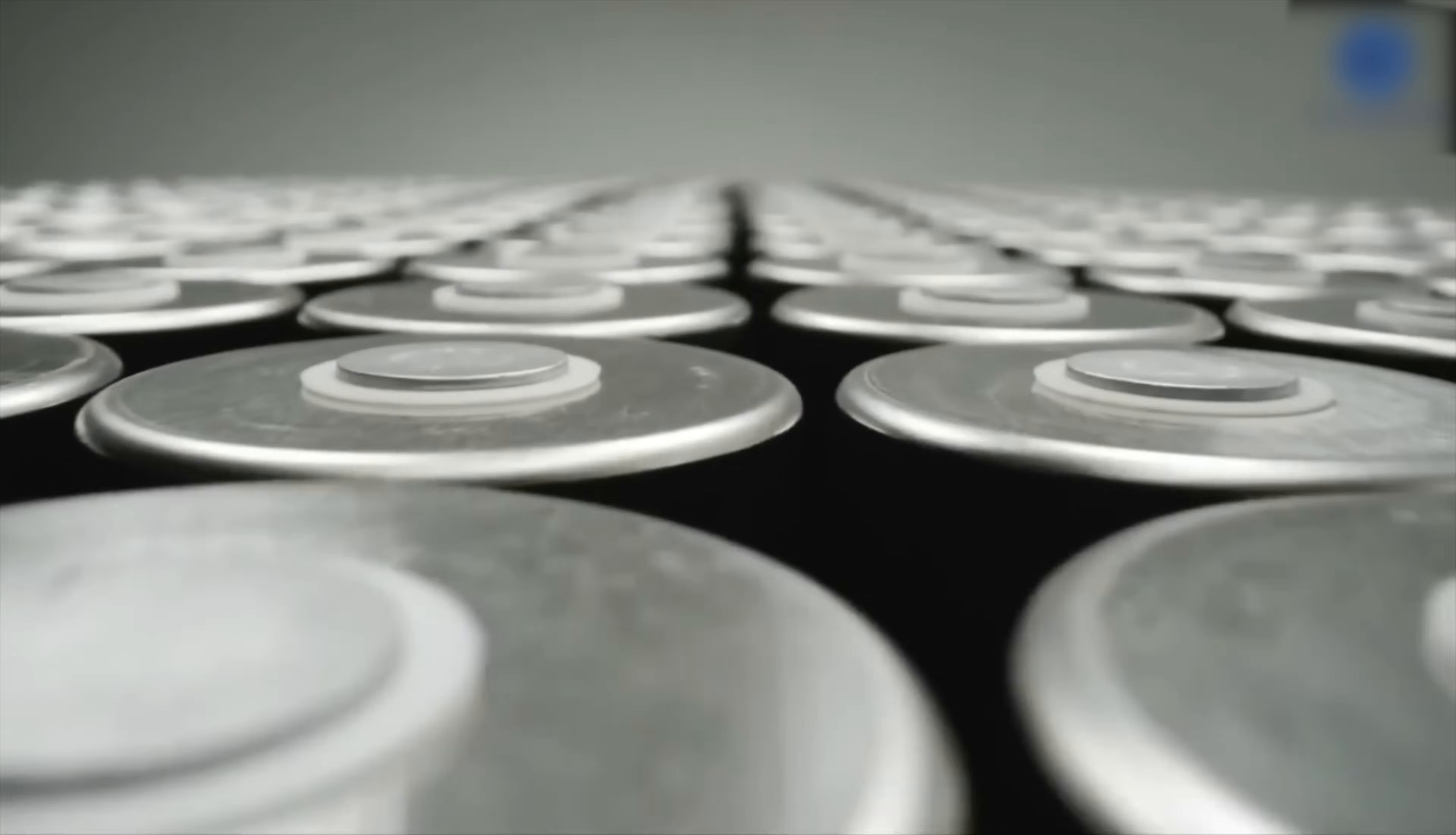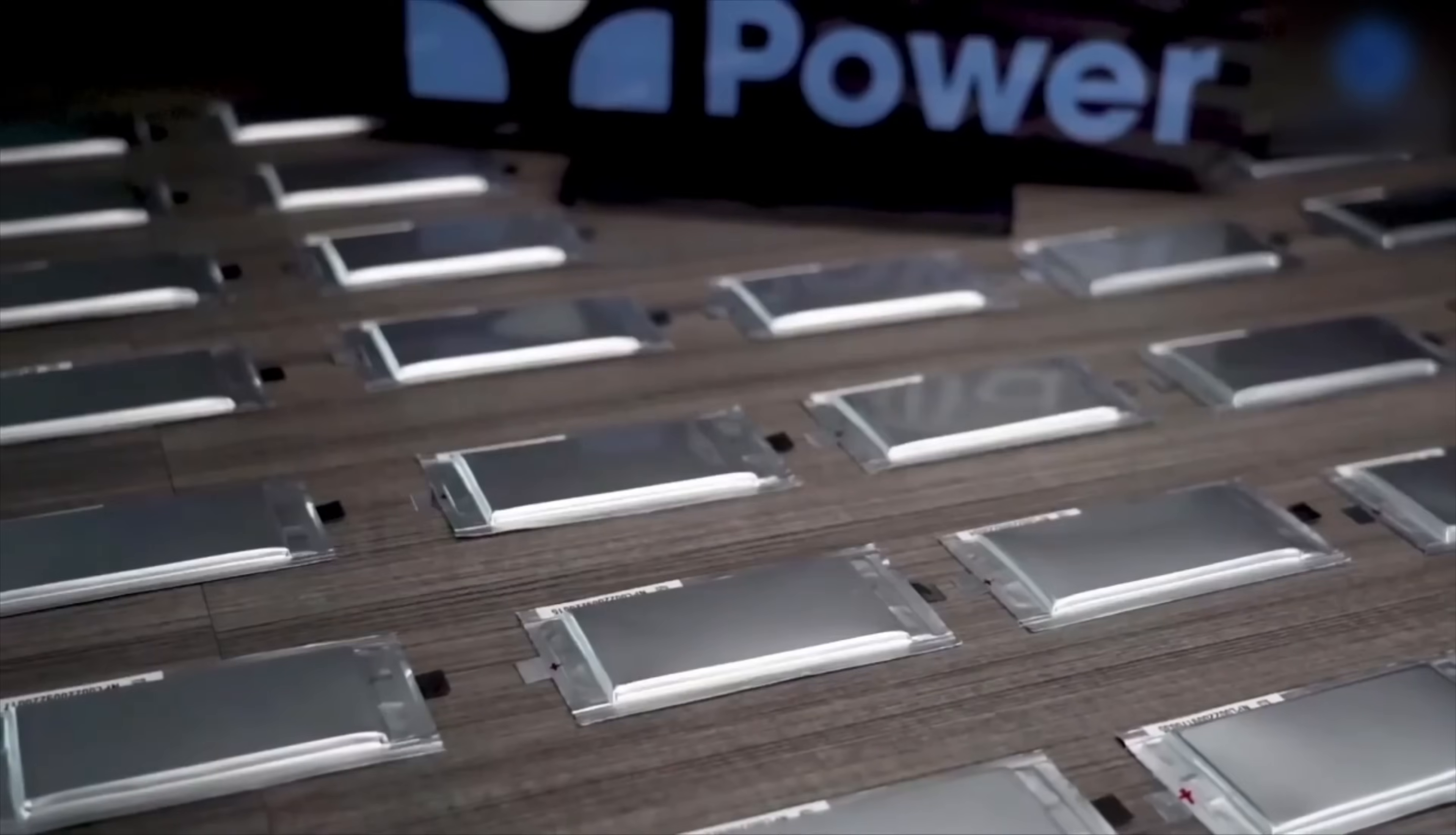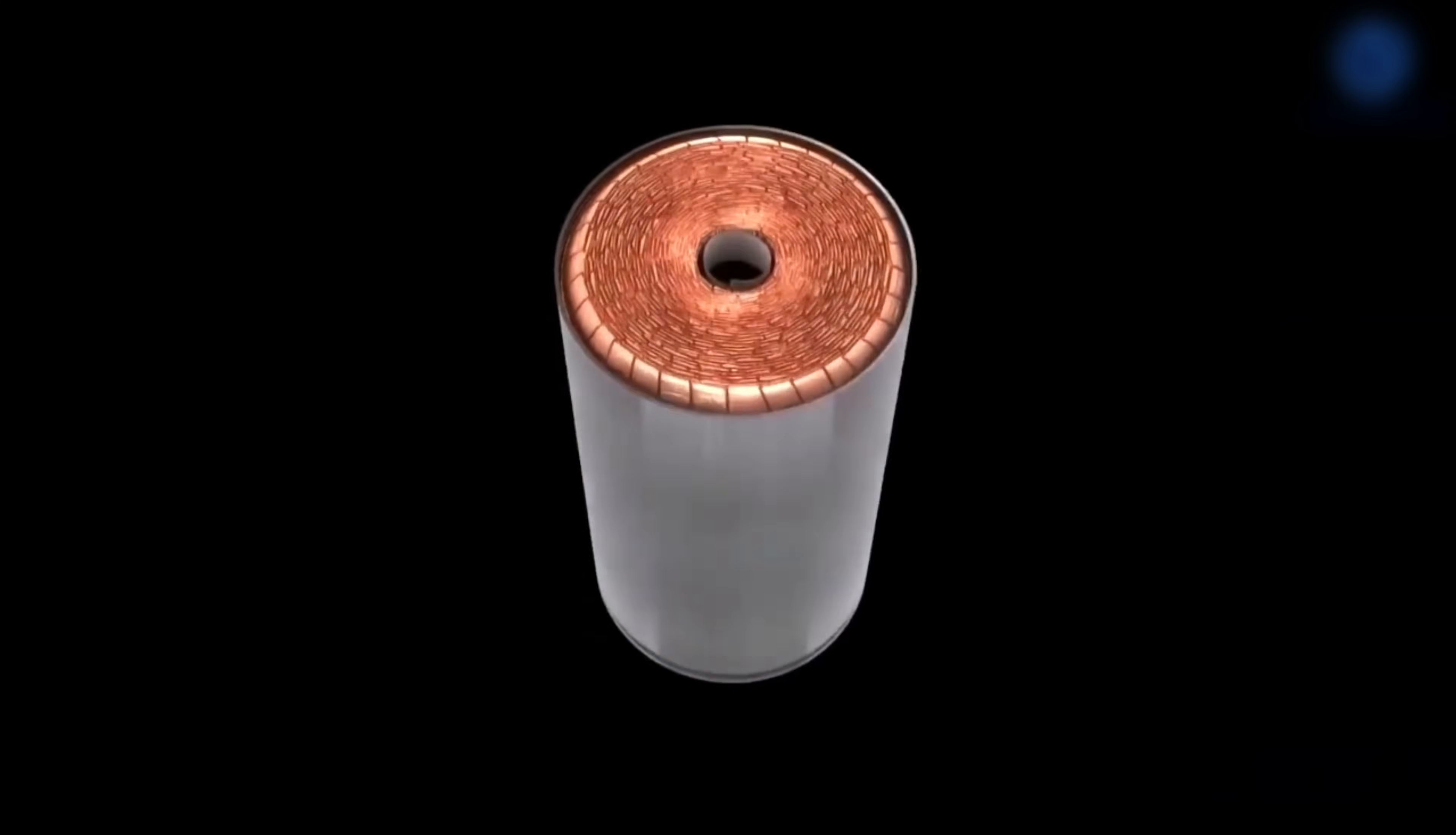What is a sulfur-selenium solid-state battery? Well, as the name suggests, it's a battery that uses sulfur and selenium as the main components of its cathode, which is the positive electrode where electricity flows out of the battery.